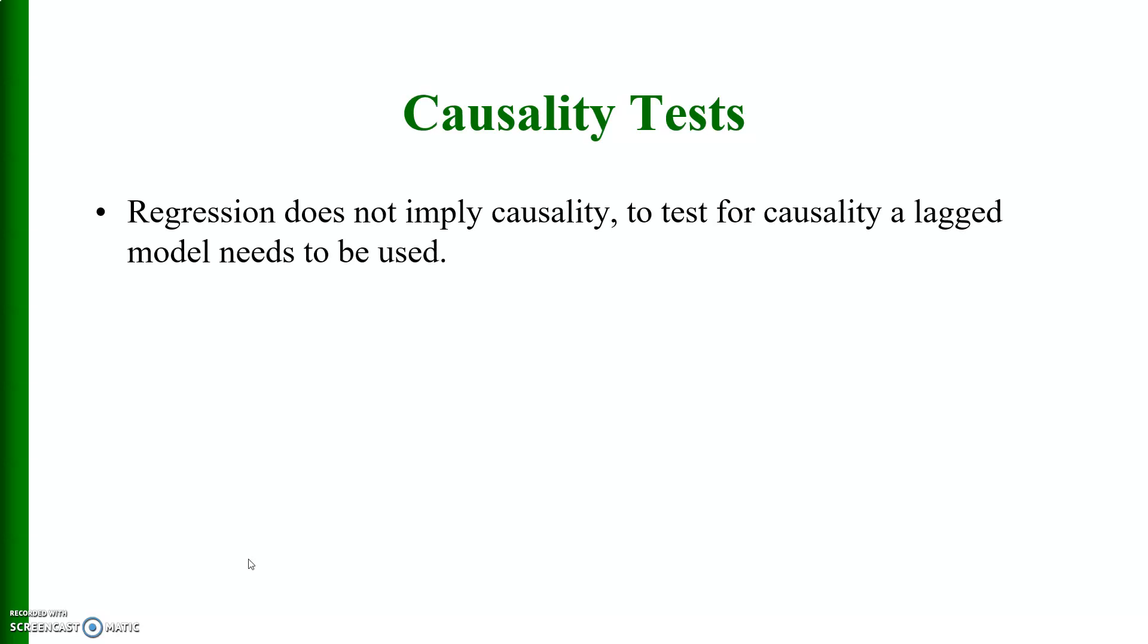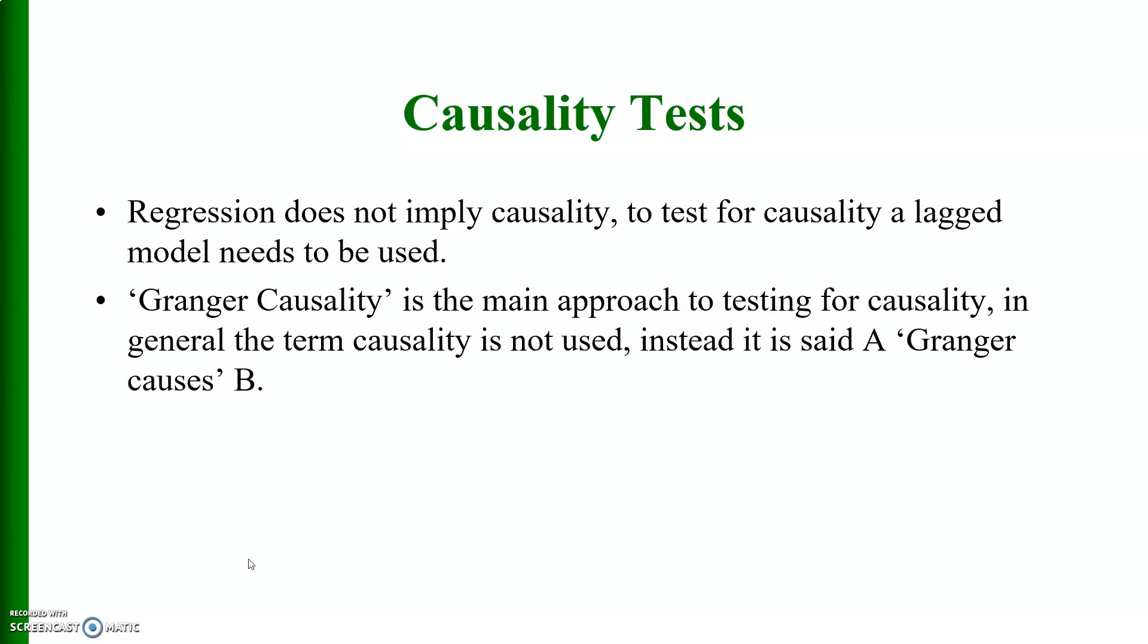Then we have causality tests. Regression itself does not imply causality. To test for causality, a lag model needs to be used. Granger causality is the main approach to testing for causality. In general, the term causality is not used. Instead, it is said a Granger causes b. Granger causality tests can also be used to determine if a variable is exogenous or not.